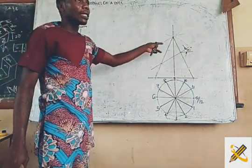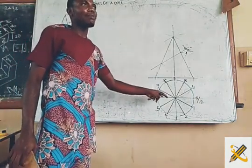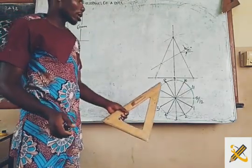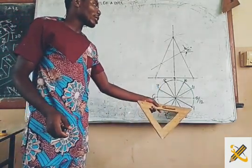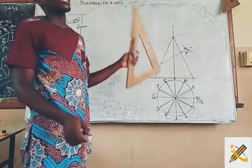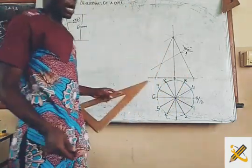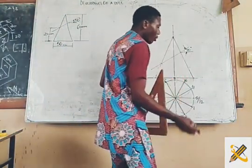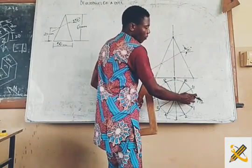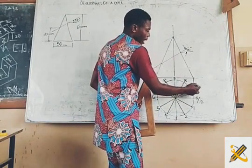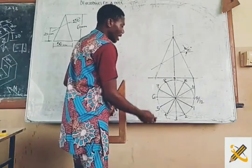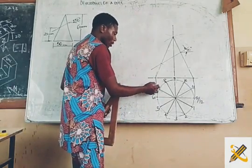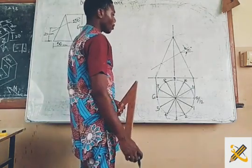After doing the initial elevation and the plan, the next step is to project each of the points directly towards the elevation, then bring out the pattern development. So already points 0 and 12 have already aligned themselves with the end position here. The same thing applies to this point — it has already aligned itself with this other position here.